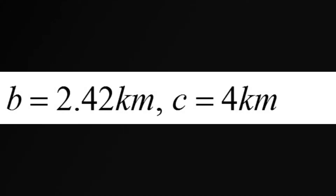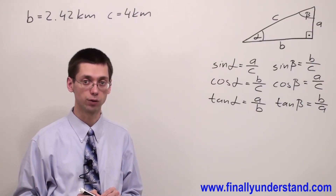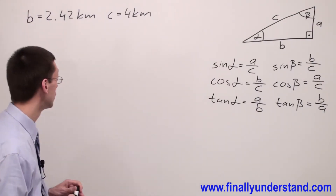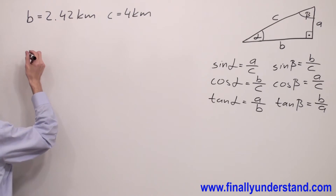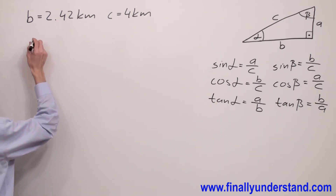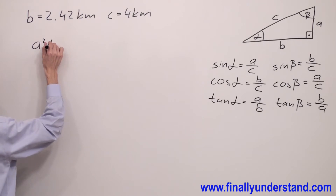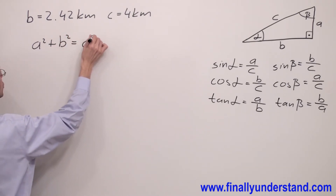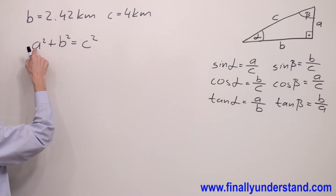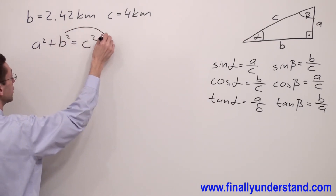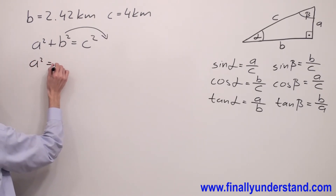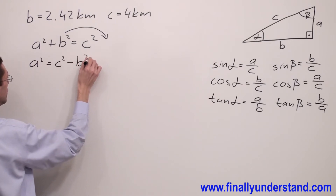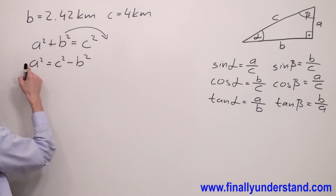We have another example on the board. We have two sides of the triangle given and we're supposed to find the third one. In order to find the third side when two sides are given, I'm going to use the Pythagorean theorem. Always write the formula first: a squared plus b squared equals c squared. In order to find side a, I have to move b to the right side of the formula, so a squared equals c squared minus b squared.